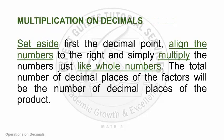To multiply decimals, it is important to set aside first the decimal point, then align the numbers to the right, and finally simply multiply the numbers just like whole numbers. Basically, you ignore the decimal points for now, align all the numbers you are multiplying to the right-most side, and then perform the operation. The total number of decimal places of the factors will be the number of decimal places of the product. Since you are multiplying decimal numbers, your answer would also be a decimal number, and the position of that decimal point depends on the number of decimal places of the factors.